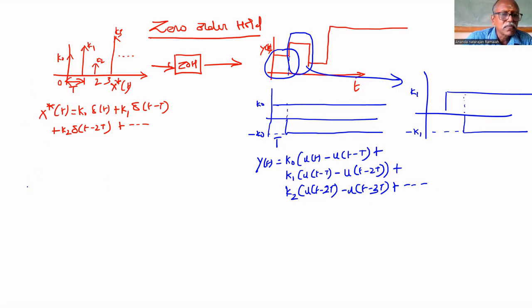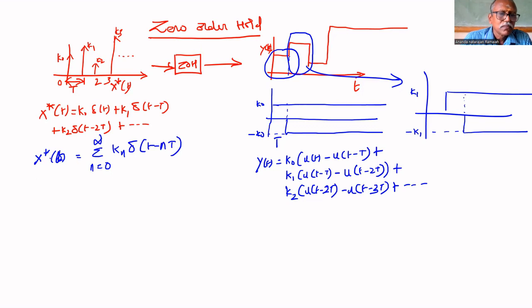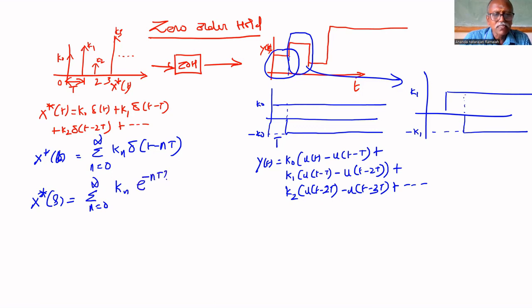What is X*(S)? We can write in summation form: X*(T) equals the sum from N equals zero to infinity of K_N times delta of T minus NT. If you take the Laplace transform of this input, X*(S) equals sigma N equals 0 to infinity of K_N times e to the power minus NTs. This is a delayed function, that's why e power minus NTs.